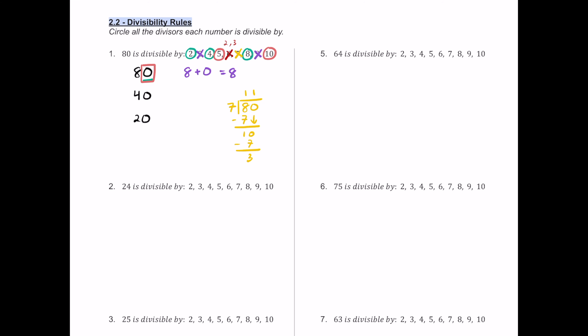For number 2, we have 24. The last digit is even, so it's divisible by 2. Half of 24 is 12, so 4 works. Half of 12 is 6 — still even — so 8 works. I always recommend doing 2, 4, and 8 together since they're all just taking half, half, and half. Then let's look at the sum of the digits: 2 plus 4 equals 6.